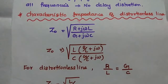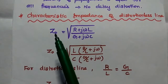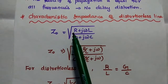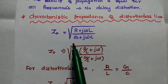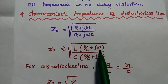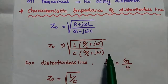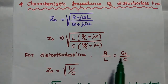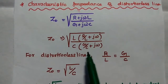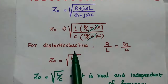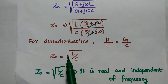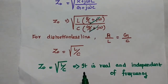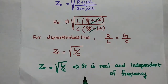The last one is the characteristics impedance of the distortionless line. The formula is Z0 equal to square root of R plus j omega L divided by G plus j omega C. Taking L outside from the numerator and C from the denominator, we get L into r by l plus j omega, divided by C into g by c plus j omega. For the distortionless line, we know that r by l equals g by c, so these two terms cancel each other. We get characteristics impedance Z0 equal to square root of L by C. It is a real value and independent of frequency. This is the characteristics impedance of the distortionless transmission line.